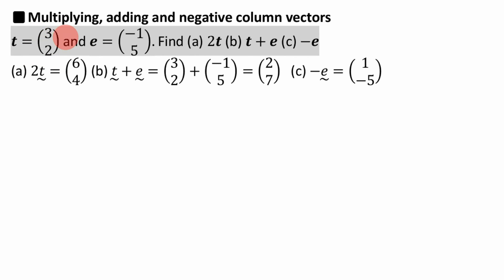This vector is saying move 3 to the right, 2 up. This one's saying move 1 to the left, 5 up. So hopefully you've already had an introduction to vectors, and I don't want to go into that too much. This is leading on to the more advanced stuff.